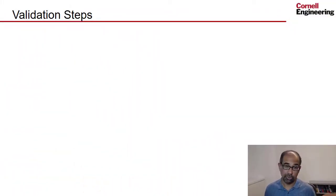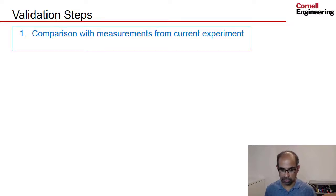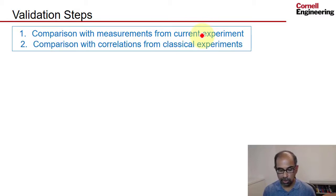And if I go to my slide here, there are two ways one could do this for this particular case. The first is to compare the simulation results with measurements from the current experiment that students at Cornell do in the lab course and I'll show you some results from that. One could also do comparisons with correlations and classical experiments. This is a very well studied problem and there are correlations for the friction factor and the Nusselt number versus Reynolds number and also the Prandtl number.